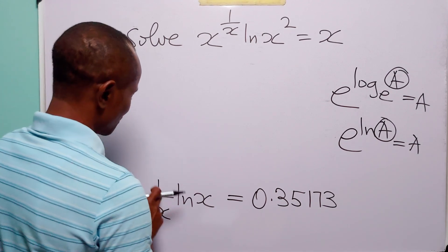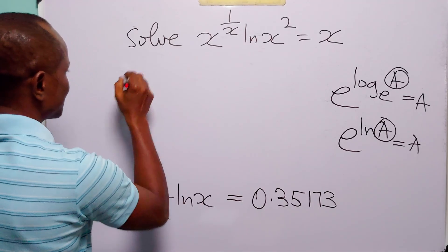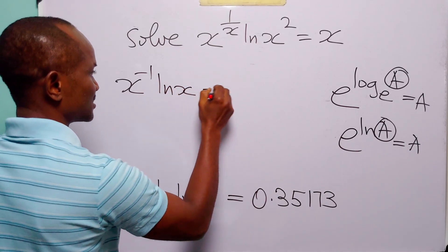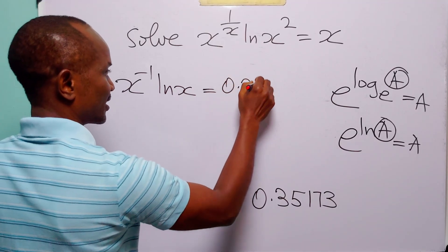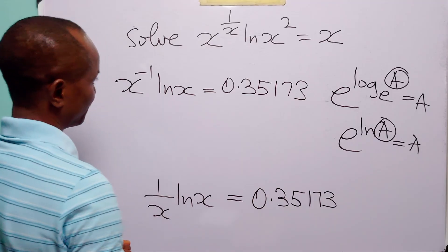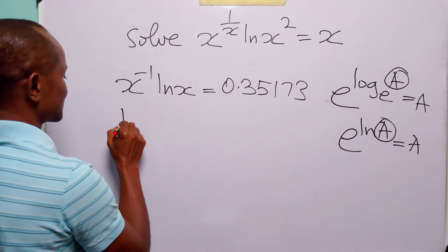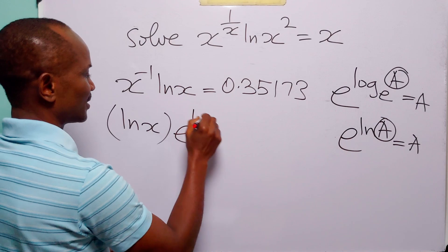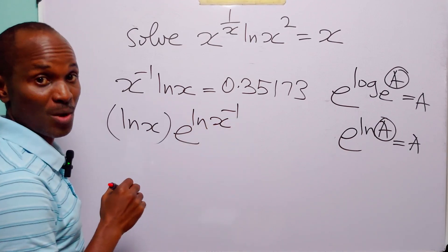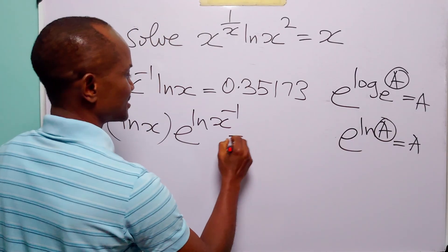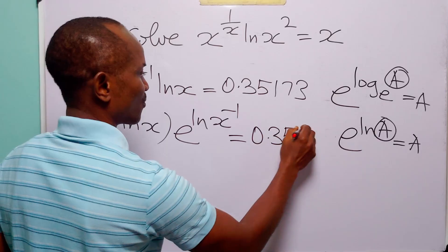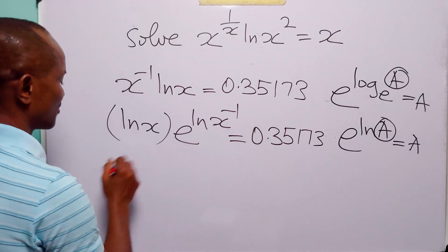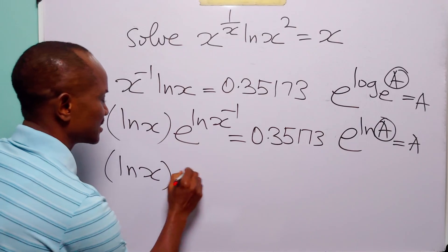We still cannot solve this by simple algebraic means, so let us rearrange. We know that 1 over x can be written as x to the power minus 1, so we have x to the minus 1 times ln x equals 0.35173. We can rewrite this as ln x multiplied by e to the power ln x to the power minus 1, according to the same identity.